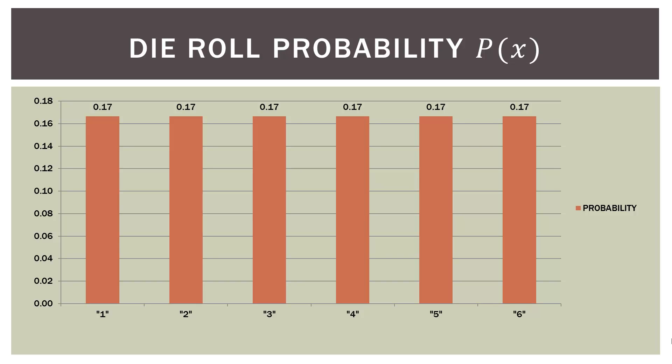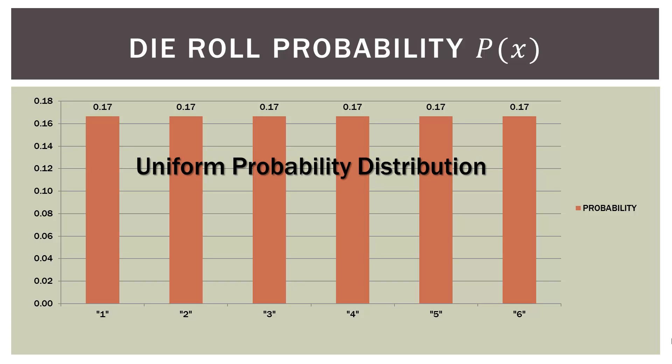When we chart our probabilities, we have 1, 2, 3, 4, 5, 6 along the bottom as our outcomes, and the probability of each is exactly the same — it rounds to about 0.17. We call this a uniform probability distribution. The coin flip is one as well, because each outcome has the exact same probability.